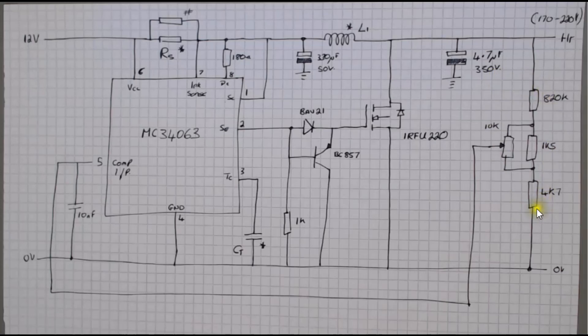The feedback control is via this network here and basically all I'm doing is when the pot is at its lower end it will give us about 220 volts out and when it's wound up to the high end it drops it to about 170.